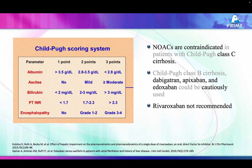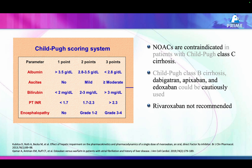In liver disease: if a patient has cirrhosis and there is an indication for NOAC use in atrial fibrillation, NOACs should not be used in Child-Pugh class C — i.e., severe hepatic failure. Dabigatran and apixaban can be used with caution in milder liver disease, but rivaroxaban — because of its hepatic clearance — should not be used and is not recommended.